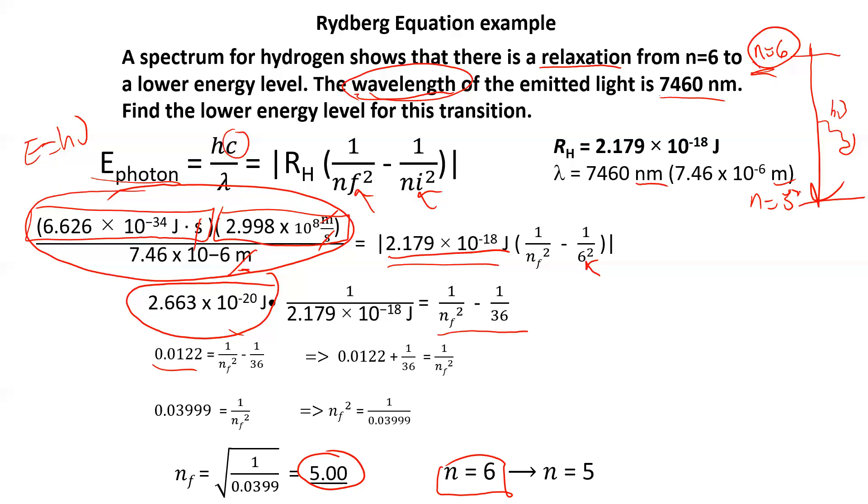Now, that's not a big drop. That's not a lot of energy released, because it's only from the sixth to the fifth. And realize the biggest energy difference is from the first to the second, and then they get smaller.